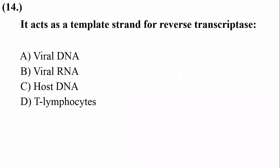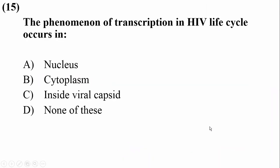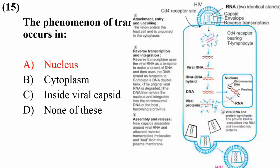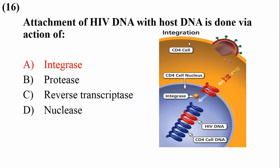In HIV, the viral RNA acts as a template for reverse transcriptase and is transcribed into double-stranded DNA for incorporation into the host genome. The phenomenon of transcription in the HIV life cycle occurs within the nucleus, while reverse transcription takes place within the cytoplasm. Attachment of HIV DNA with host DNA is done via the action of integrase enzyme, which is responsible for incorporating viral-coded DNA into host DNA.